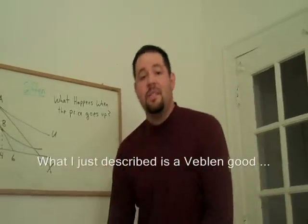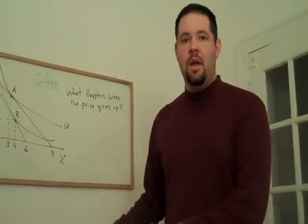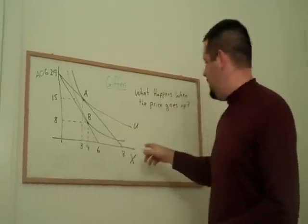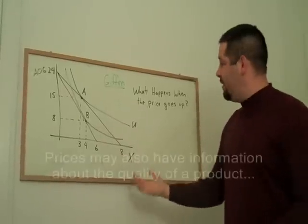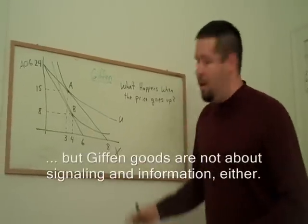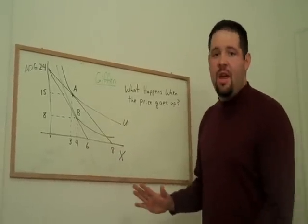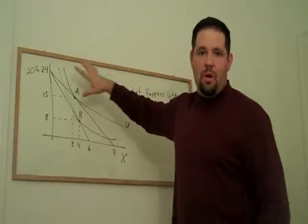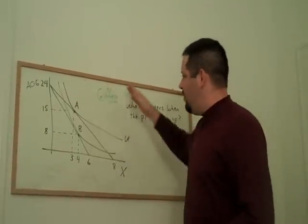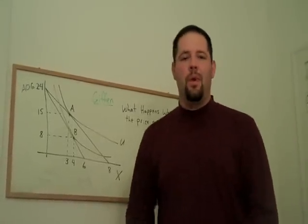Notice that in order to tell that story, we had to change what the good was. We had to assign status to the purchase. A Giffen good has no such status. Notice there's nothing on this axis that changes in terms of status. This is merely math. And so, what has to fundamentally happen cannot have anything to do with changing the nature of what this good is or introducing another good. A Giffen good has to fall within a standard price change.